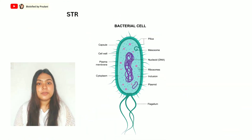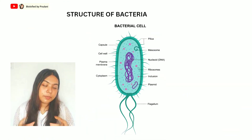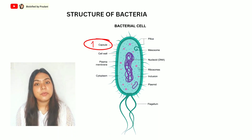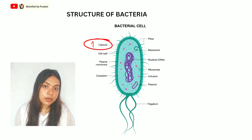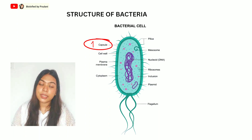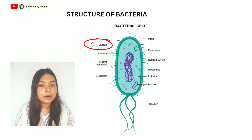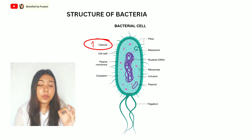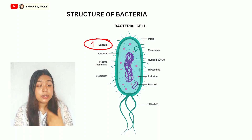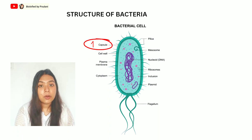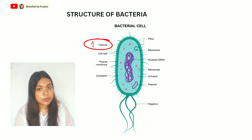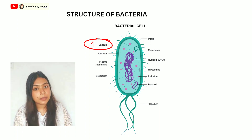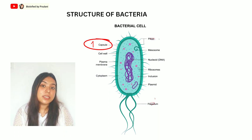Now we look at the structure of bacteria briefly — a detailed video will be uploaded in upcoming videos. First, the capsule: it is a gelatinous layer covering the entire bacteria, made up of polysaccharides. The virulence factors are determined by this layer — helping us determine whether a bacteria is pathogenic or non-pathogenic. Examples with capsules include Haemophilus influenzae and Streptococcus pneumoniae.